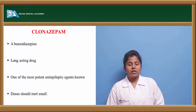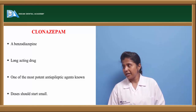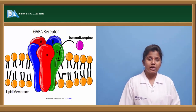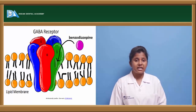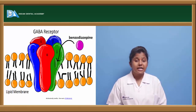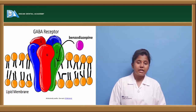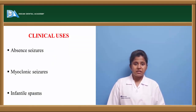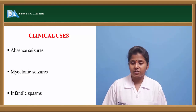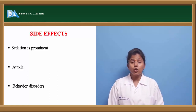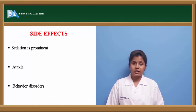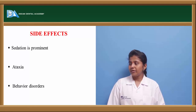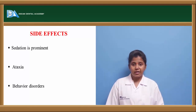Clonazepam is a benzodiazepine drug acting through the GABA receptor mechanism. It is a long-acting drug, exerting actions for almost 24 to 72 hours. It binds to the benzodiazepine site on the GABA receptor, allowing calcium entry and facilitating GABA binding. Clinical uses include absence seizures, myoclonic seizures, and infantile spasms. Side effects include prominent sedation with long-term use, ataxia (uncontrolled body movements), and behavioral disorders.